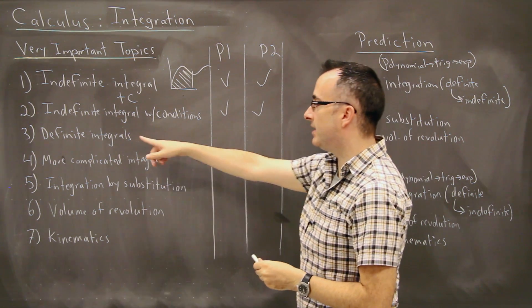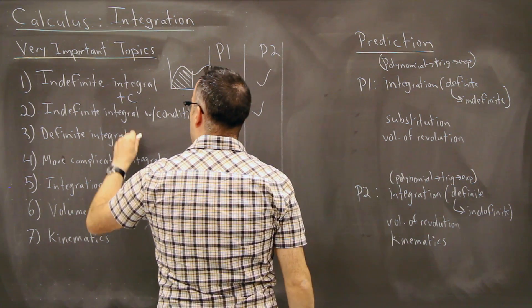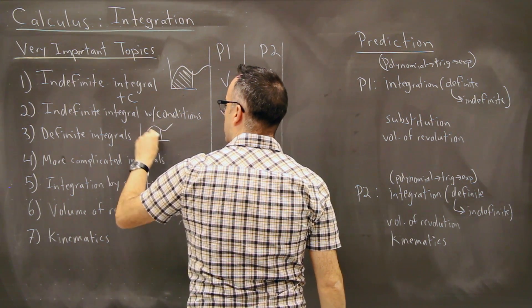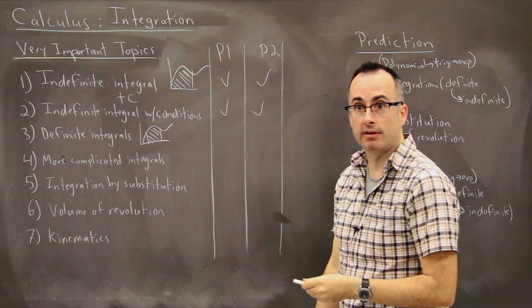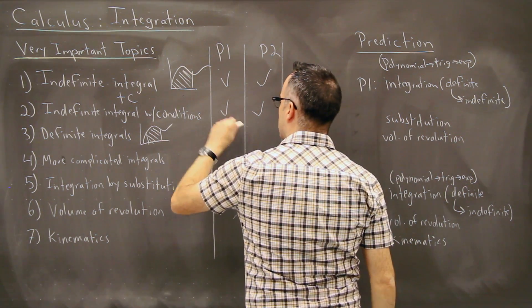Then we have definite integrals. These are places where we do have bounds. So that means that we're actually doing an area from a certain place to a certain place. So you know exactly where you're starting and where you're finishing. These ones, you actually calculate that area for sure. So these are also paper one and two.